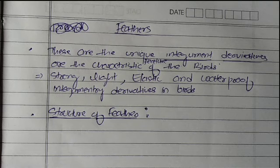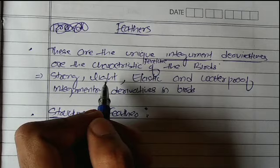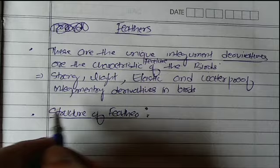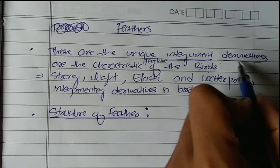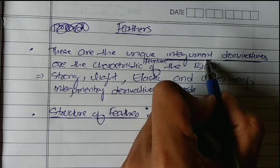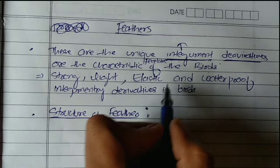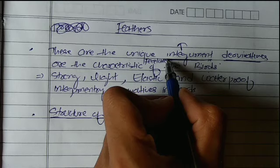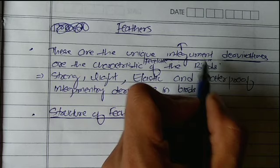Good morning students. Today's topic is the feathers. So let us start with the basics. First question: what are feathers? These are defined as the unique integumentary derivatives, which is the characteristic feature of birds. The integument is the outer skin which covers the body, and it is divided into two layers: dermis and epidermis. The upper layer is called epidermis.